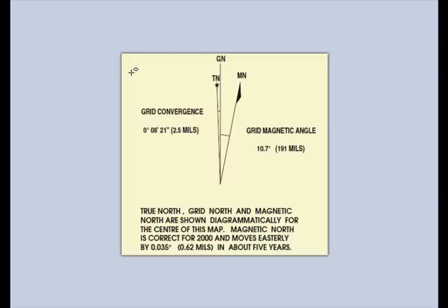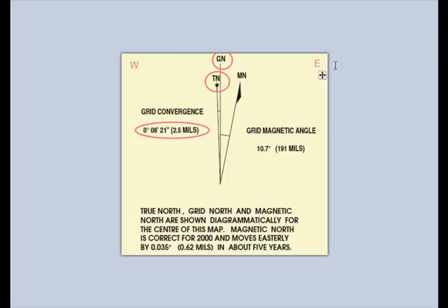If we go back to our North Point Diagram, you can see that there is a difference between True North and Grid North. That difference is referenced here as 8 minutes to the East. True North is to the West of Grid North, or Grid North is to the East of True North. So you can say that Grid North is 8 minutes East of True North.